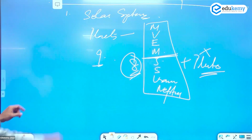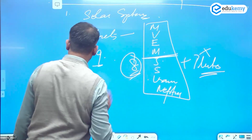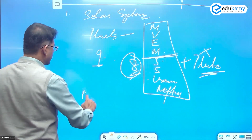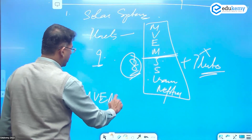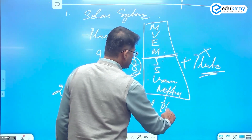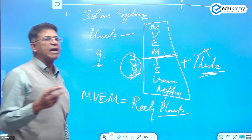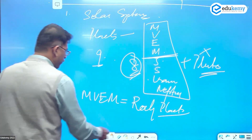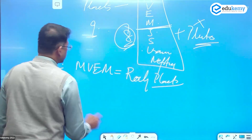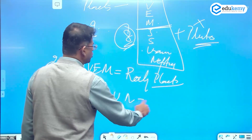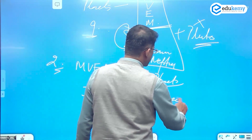There are eight planets. The first four — Mercury, Venus, Earth, Mars — are called rocky planets because they are primarily made up of rocks. They're called rocky planets.